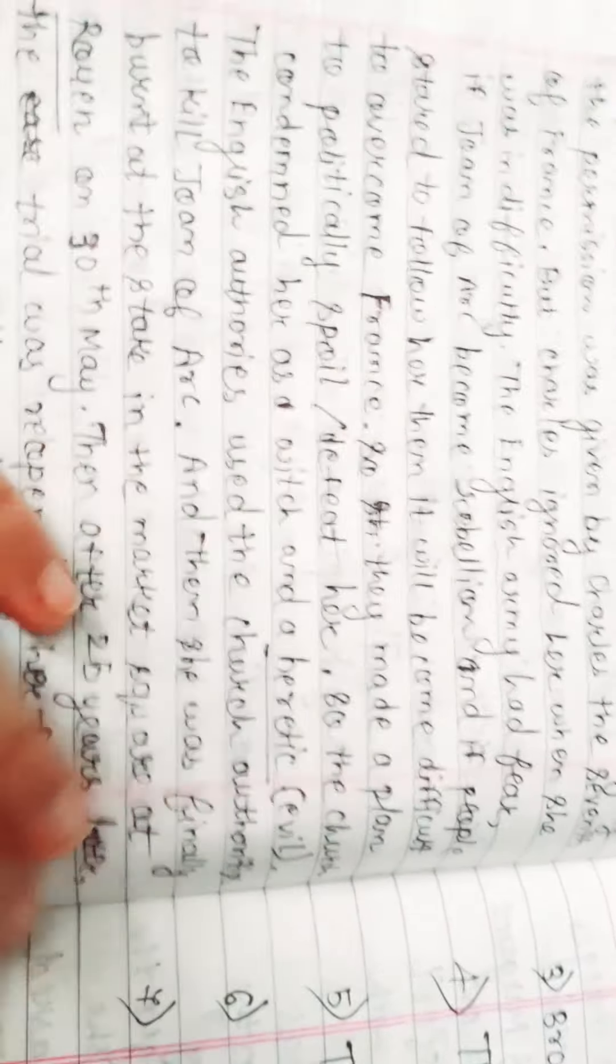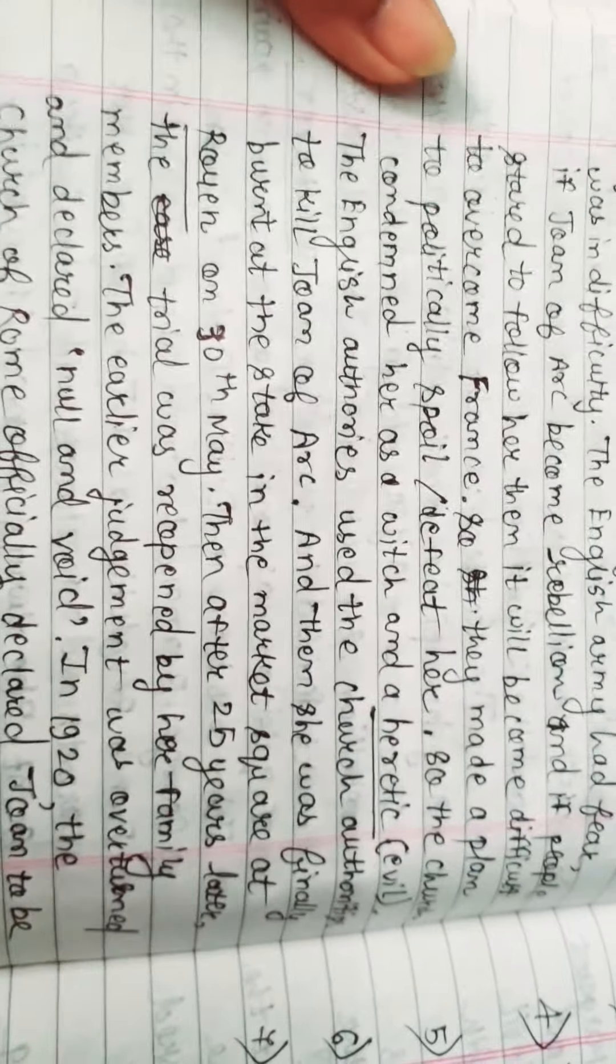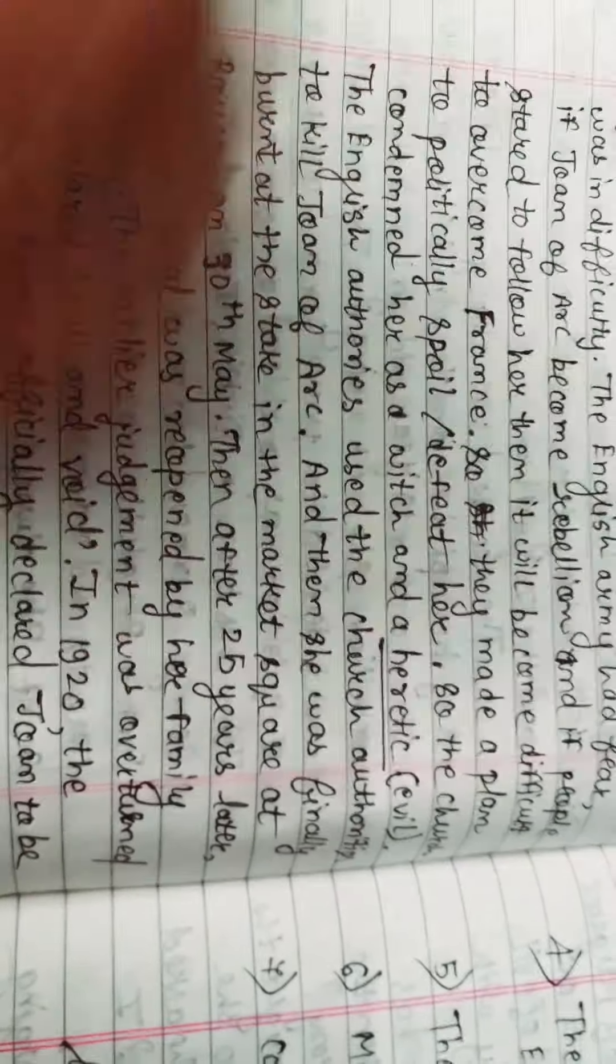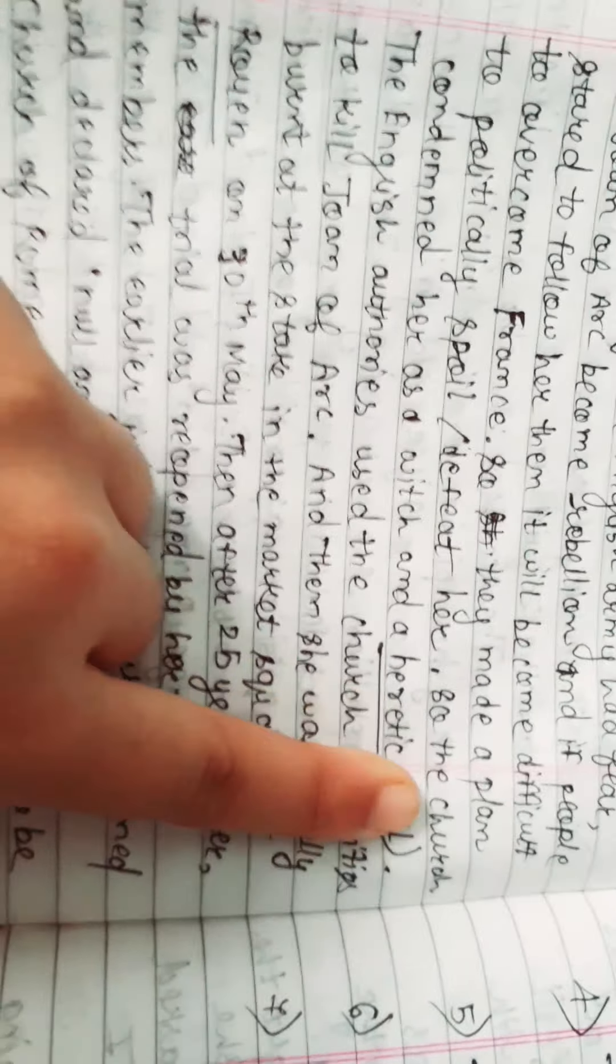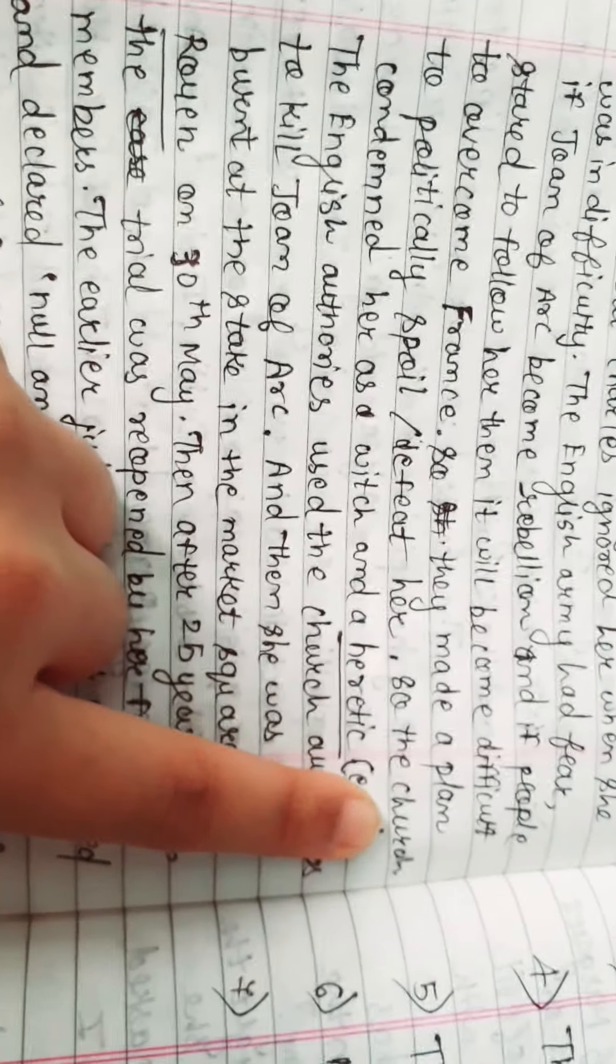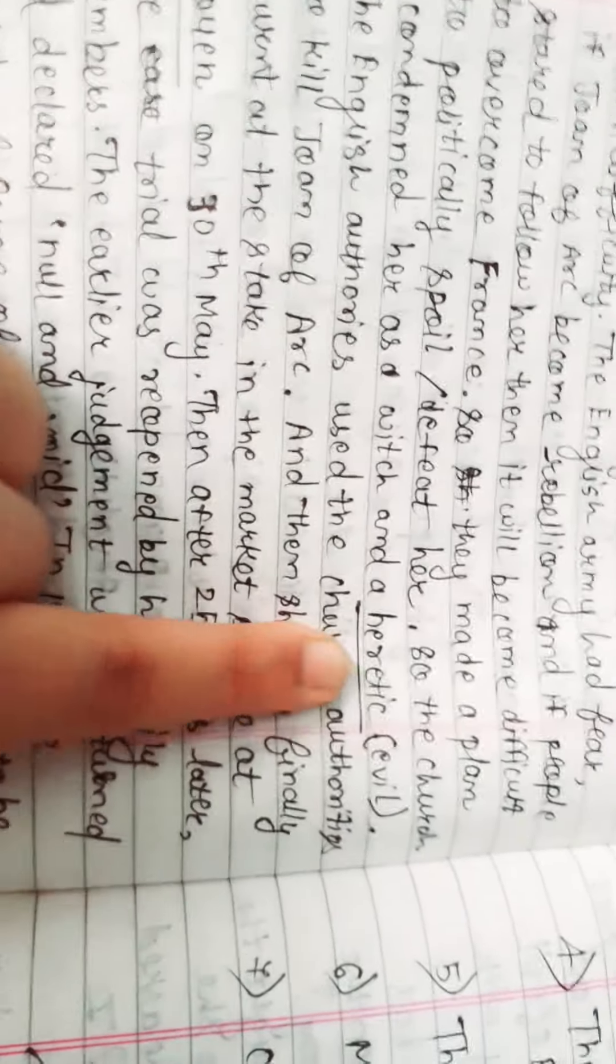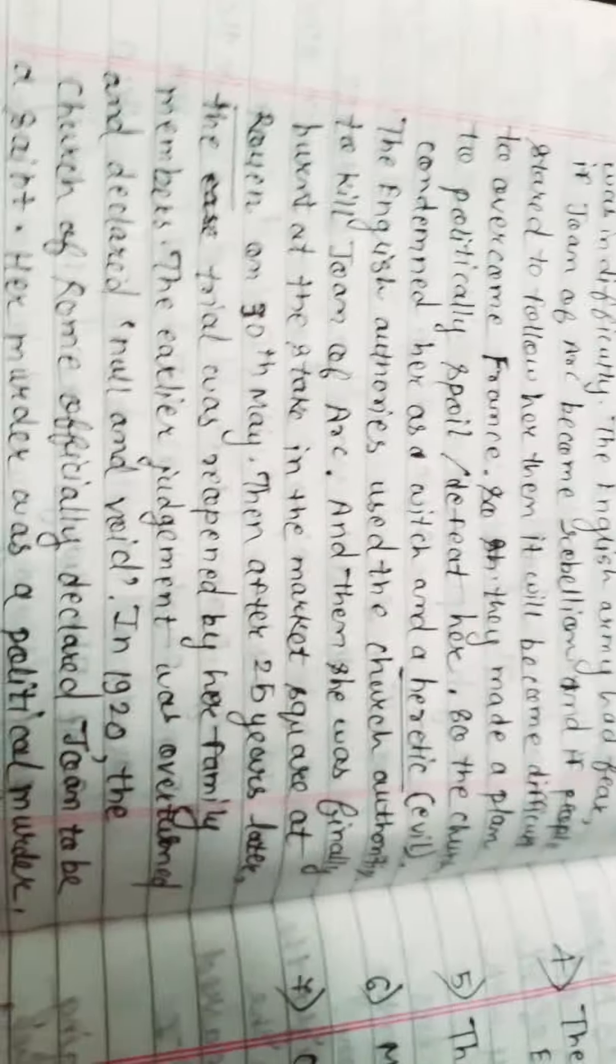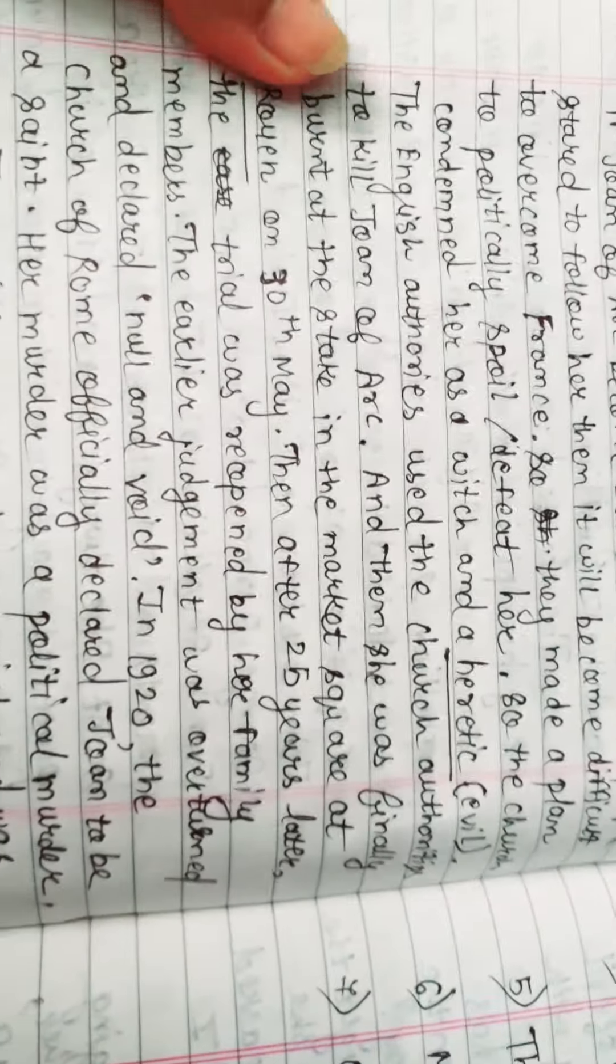So they made a plan to politically defeat her. The church condemned her as a witch and a heretic evil. Here the church condemned Joan as a witch and heretic. Heretic means evil woman. The English authorities used the church authorities to kill Joan of Arc.